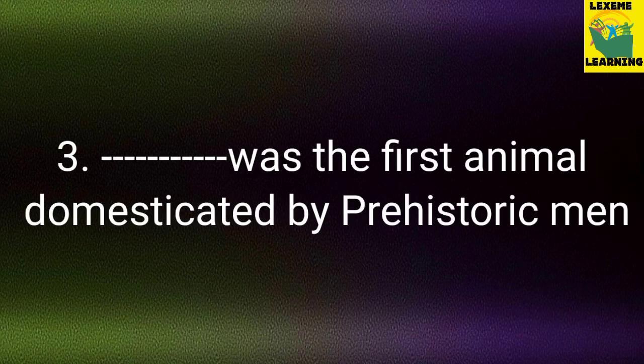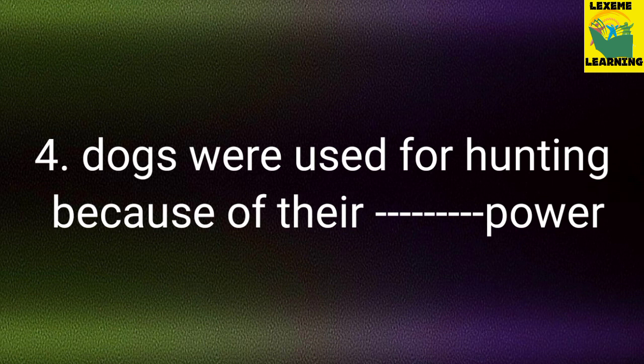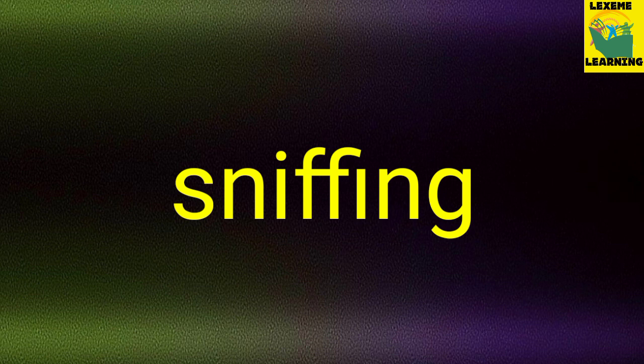Question number 3: Dash was the first animal domesticated by prehistoric men. Your answer: dog. Question number 4: Dogs were used for hunting because of their dash power. Your answer: sniffing. Sniffing means the smelling power.